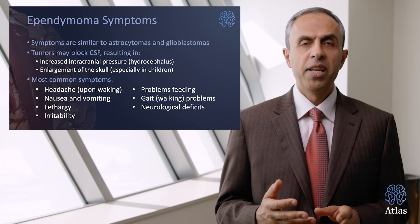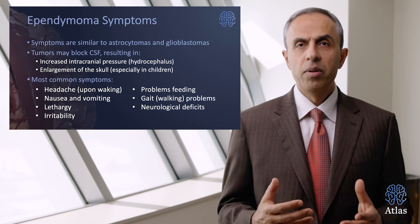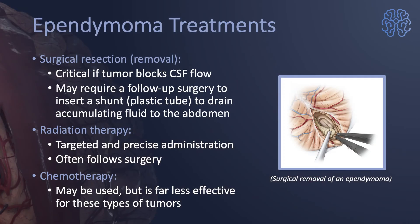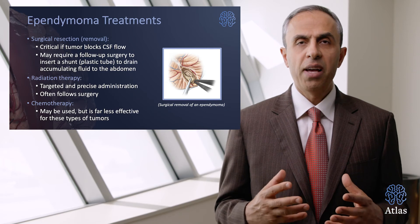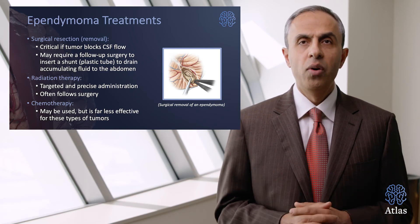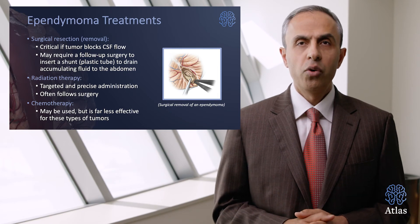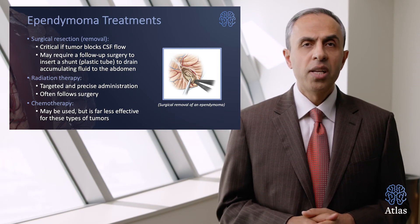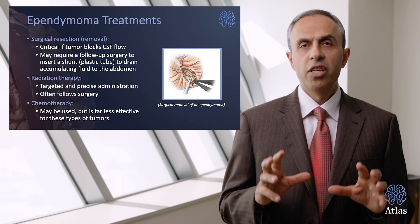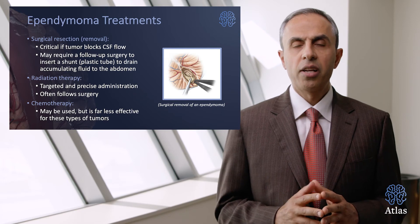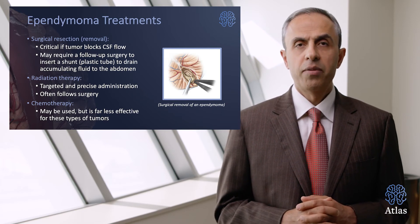Additional symptoms of ependymomas include nausea, vomiting, lethargy, severe headaches, irritability, and problems with feeding and gait. Surgical resection is the first step in treatment. However, after surgery, these tumors can sometimes block CSF flow pathways, requiring a shunt — a tube placed under the skin running from the head into the abdomen — to permanently drain brain fluid. Certain ependymomas may also require targeted radiation therapy following surgery. Chemotherapy may be used but is far less effective for these tumor types.